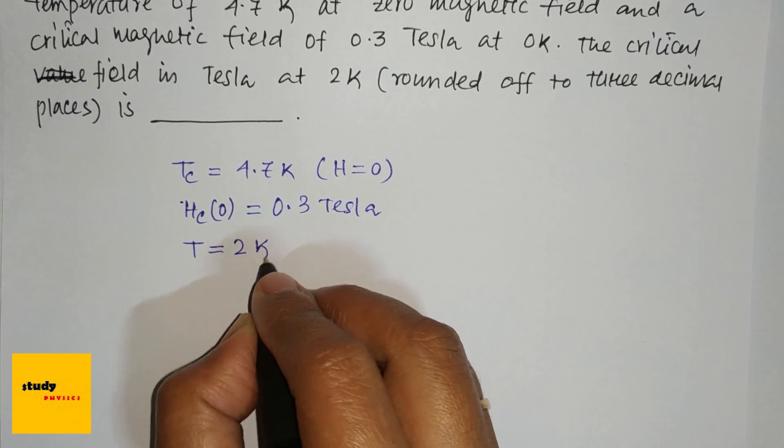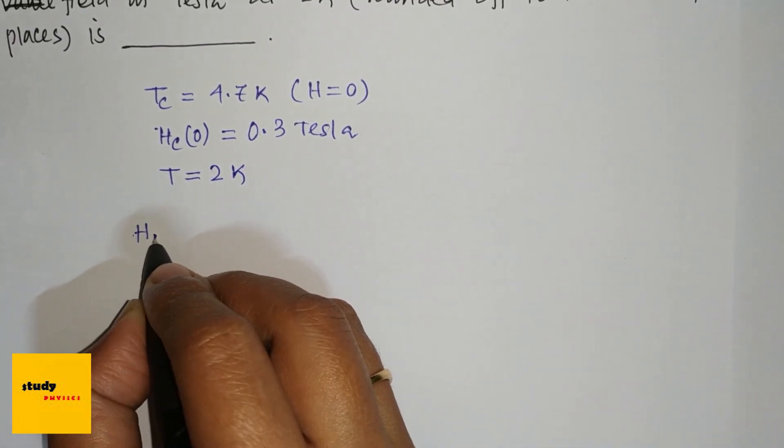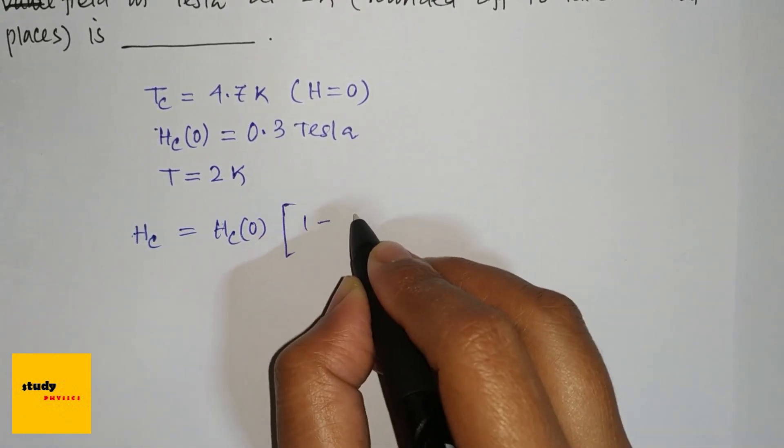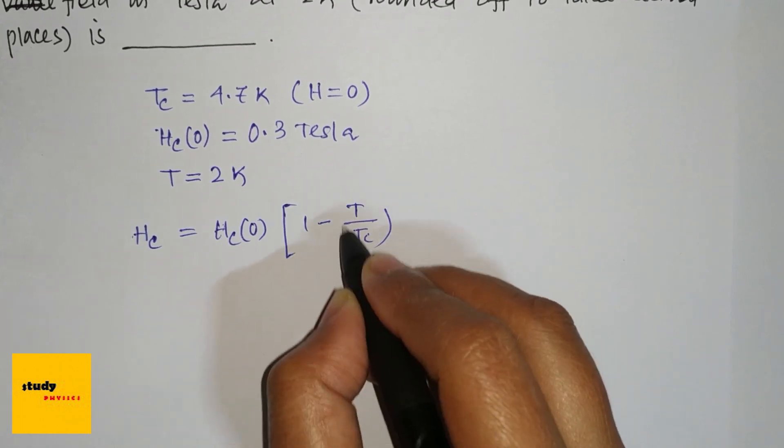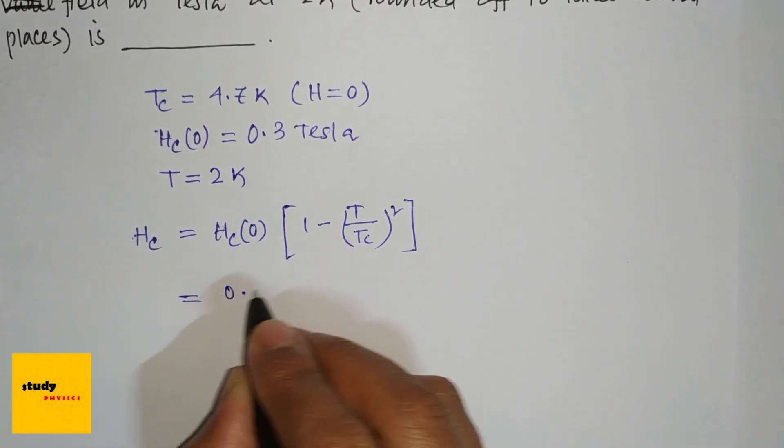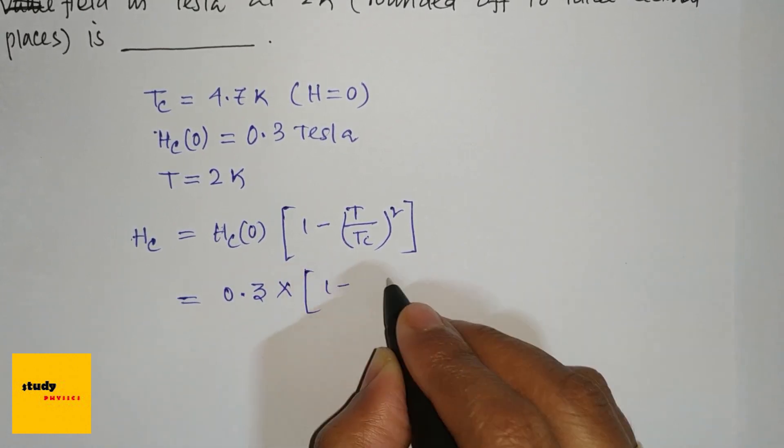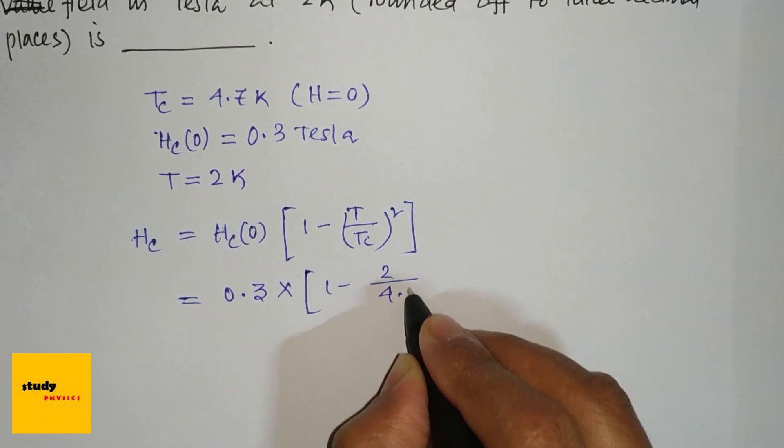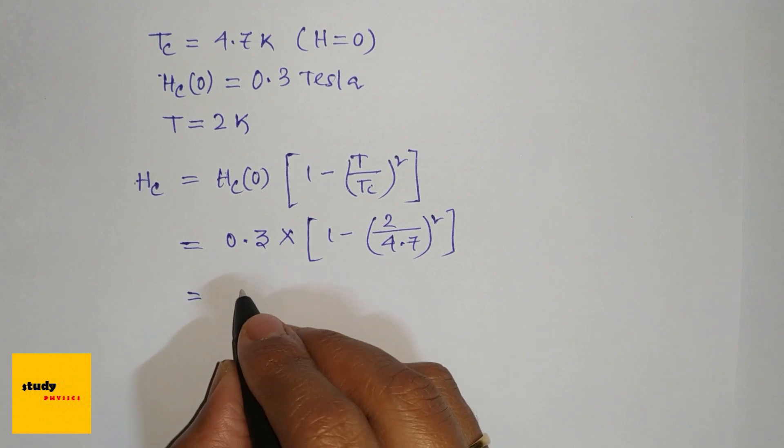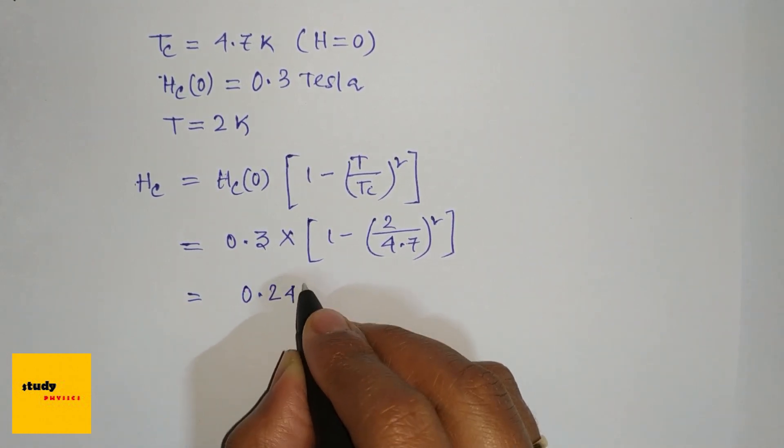We know the formula for critical field: Hc equals Hc(0) times 1 minus T over Tc squared. Just putting in the values: 0.3 times 1 minus 2 divided by 4.7 squared, which equals 0.245.